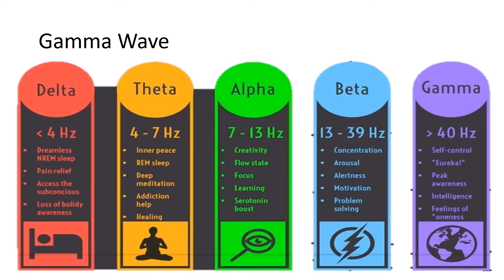Gamma waves are the latest EEG wave type with the fastest brain waves and the highest frequency of more than 40 Hz. They are associated with higher brain functions like cognition and memory, and occur when people are in peak physical awareness, intelligence, and feelings of oneness.